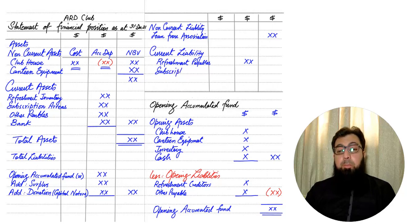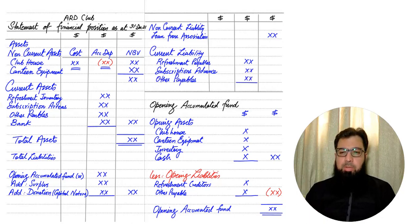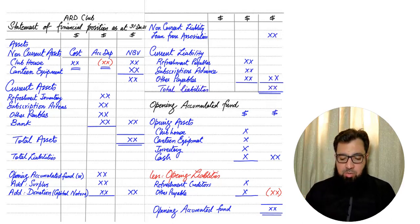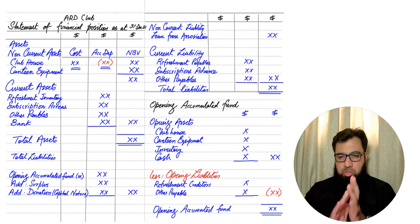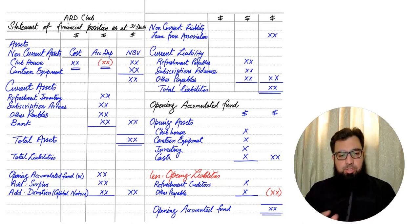Then we have current liabilities: trade payables for refreshments, and advanced subscription. Advanced subscription means members have paid us money but we haven't yet provided the service — if we cannot provide the service, we must return the money, so it is a liability. Then there are other payables such as accrued wages. Adding capital and liabilities gives the total. Total assets must equal total liabilities — if they match, our statement of financial position is correct. I hope I was able to explain the underlying concepts of not-for-profit organization and club accounts. If you like the video, please subscribe to my channel and refer other students. Thank you.